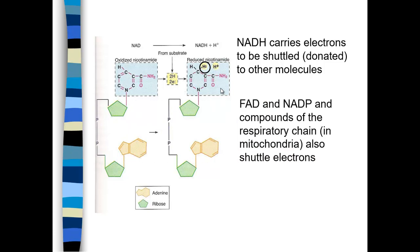There are other compounds involved in electron transfer. NAD and FAD are used in glycolysis. NADP — nicotinamide adenine dinucleotide phosphate — is involved in photosynthesis.